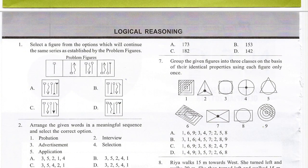Question 7: Group the given figures into three classes on the basis of their identical properties, using each figure only once.